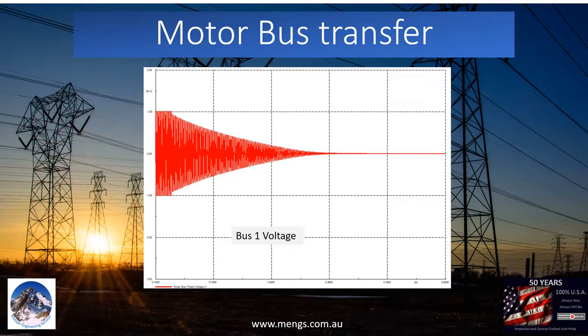Opening the main 1 circuit breaker doesn't mean bus 1 voltage drops to zero immediately. The voltage on bus 1 slowly decays; the rate of change depends on the electromagnetic time constant of the motors connected to the bus. In most cases, it will take 2 to 3 seconds for the voltage to drop to under 10% of nominal voltage. The presence of this residual voltage is due to the voltage generated by the motors.